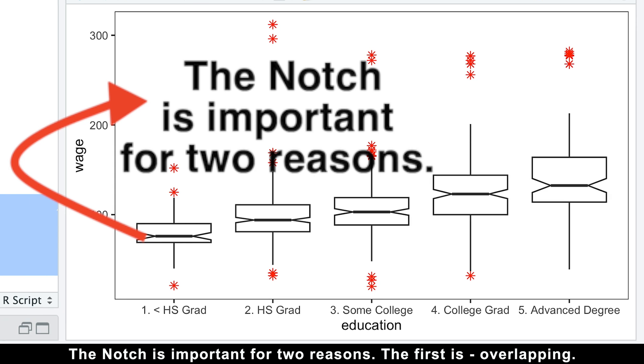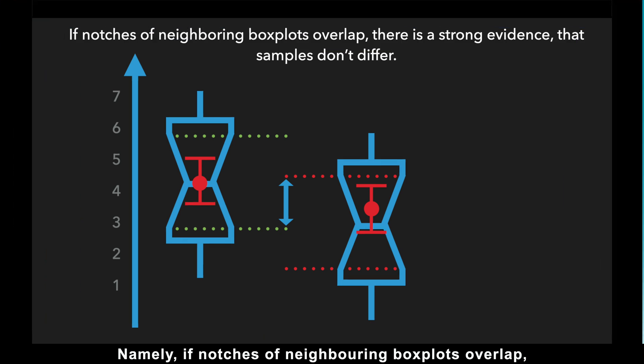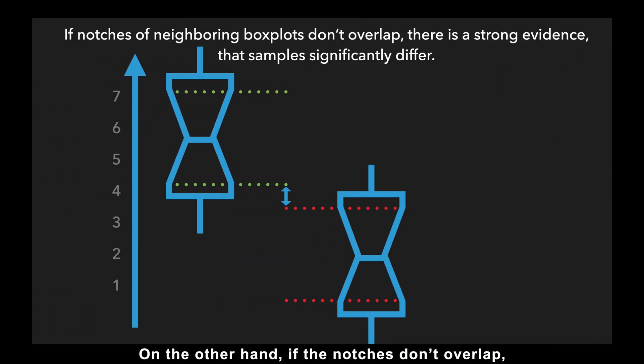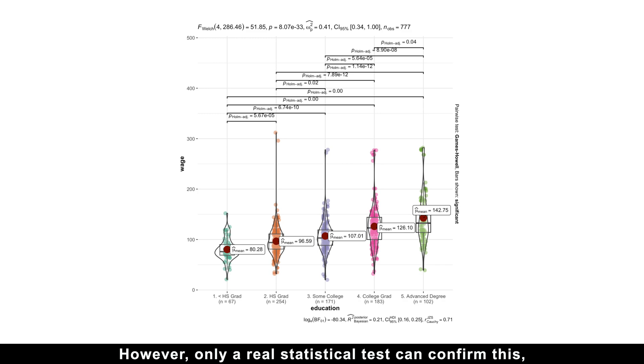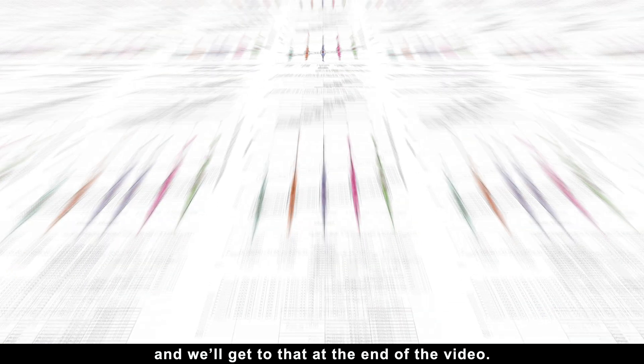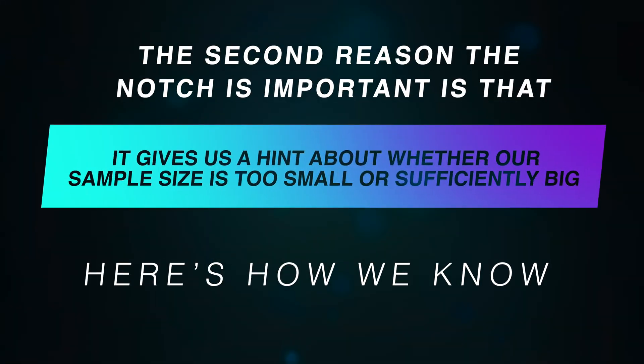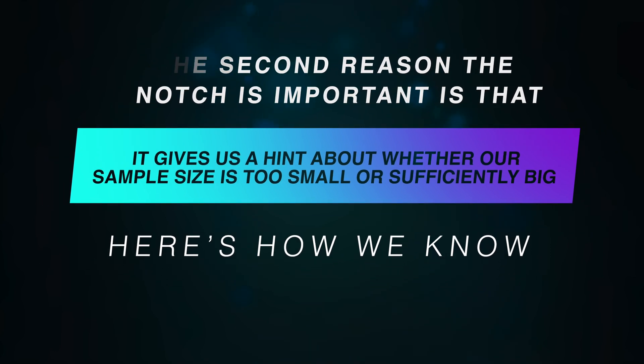The notch is important for two reasons. The first is overlapping. Namely, if notches of neighboring boxplots overlap, there is strong evidence that samples don't differ. On the other hand, if the notches don't overlap, it indicates that the samples might differ significantly. However, only a real statistical test can confirm this, and we'll get to that at the end of the video.